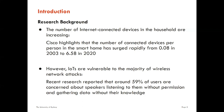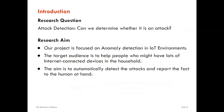The question is: what can we do to fix the issue of poor internet security? The main question this study focuses on is attack detection — can we determine whether something is an attack? Our research is focused on anomaly detection in IoT environments, targeting people who have many internet-connected devices in a household. The aim is to automatically detect attacks and report them to the user.